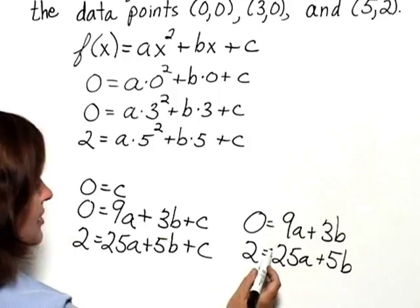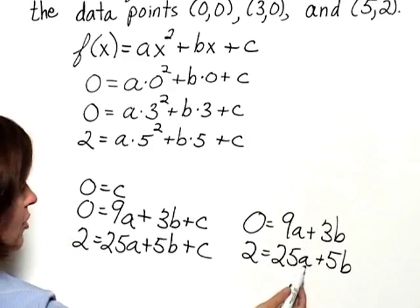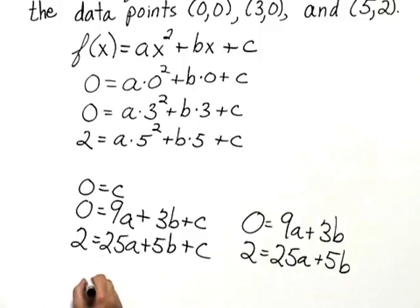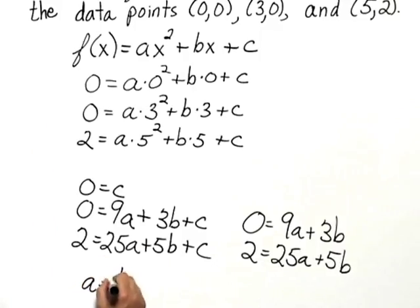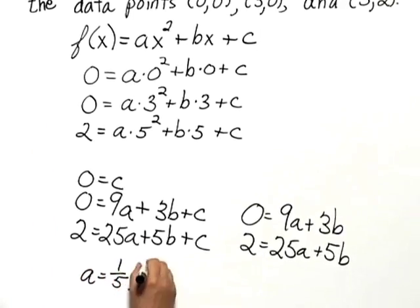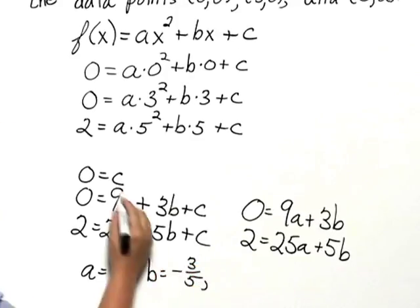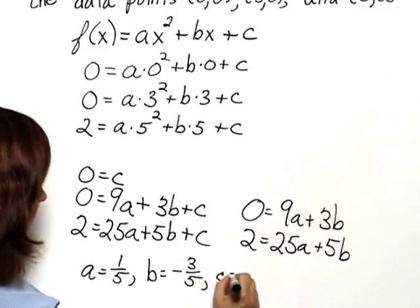What you see here now is a system of two equations in two unknowns, a and b. If we solve this, we would find that a is 1 fifth, b is negative 3 fifths, and we can see from up here that c is 0.